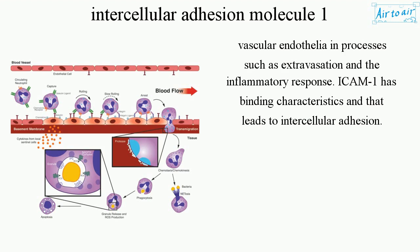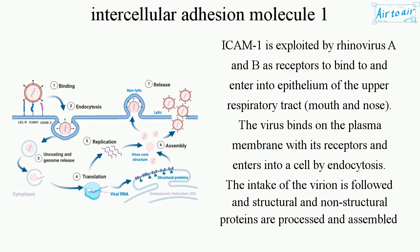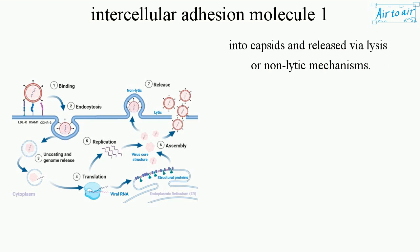ICAM-1 has binding characteristics that lead to intercellular adhesion. ICAM-1 is exploited by rhinovirus A and B as receptors to bind to and enter into the epithelium of the upper respiratory tract, mouth, and nose. The virus binds on the plasma membrane with its receptors and enters into a cell by endocytosis. The intake of the virion is followed, and structural and non-structural proteins are processed and assembled into capsids and released via lysis or non-lytic mechanisms.